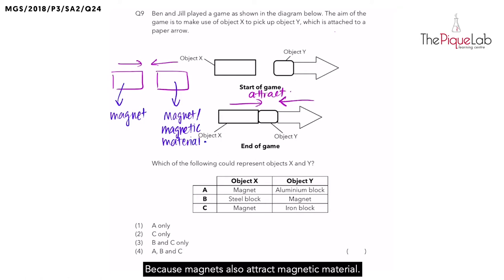Why? Because magnets also attract magnetic material. So we need to think of which of the following could represent object X and Y. Let's look at the option. If object X is a magnet and object Y is an aluminum block, would this setup work? Remember, as long as one of the objects is a magnet and the other is a magnetic material, this game would work.